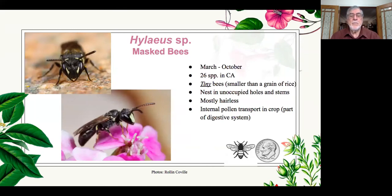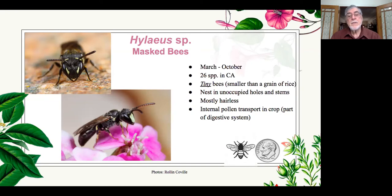Then we have these small bees — really tiny, about the size of a kernel of rice, but very common. They're called masked bees and they have a very interesting way of carrying pollen. They don't carry it on their legs or the underside of their abdomen like leafcutter bees. Instead, they take it internally into a specialized expansion of the digestive tract called the crop, then go back to the nest and regurgitate the pollen into the nest hole.